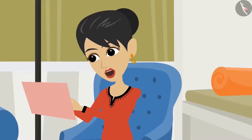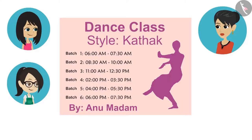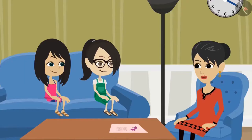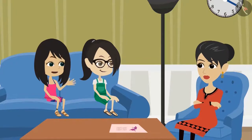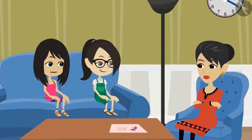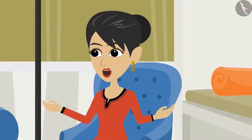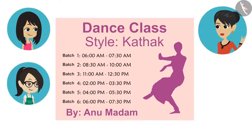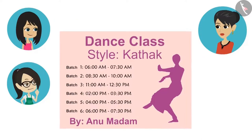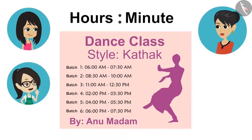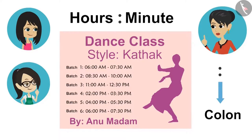Show me. The time of the dance class is written on it. Where? See here — this is the time. There is no hour or minute written on it. Oh, this means you haven't been taught about time yet? No, Aunty, we know how to tell time. Okay, then you will understand this easily. See here — it is written batch 1, and the time of batch 1 is written in front of it: from 6 o'clock to 7:30. So does this mean that these two dots in between tell the hour and minute? Yes, and these are not dots — this sign is called a colon. For time, hour colon minute is written like this on paper.